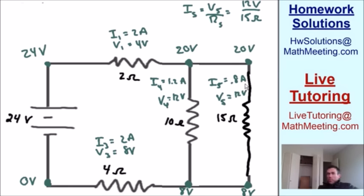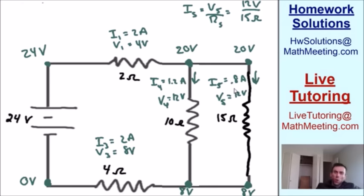This makes sense: we started with 2 amps, and when it splits into the two parallel branches we get 1.2 amps and 0.8 amps. Since 1.2 plus 0.8 equals 2, the total current is conserved — it just splits between the two paths.